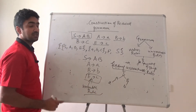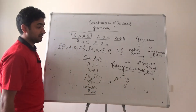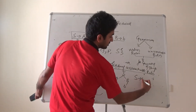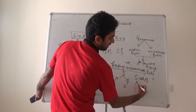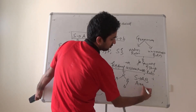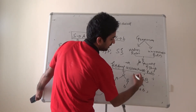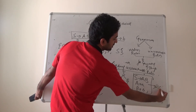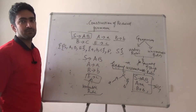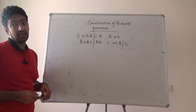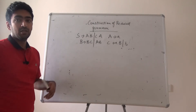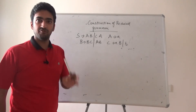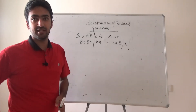The entire reduced grammar has useful rules: S generates A B, A generates small a, B generates small b. This is the reduced grammar — we have seen what is useful and what is useless, and we have removed useless and unreachable rules.